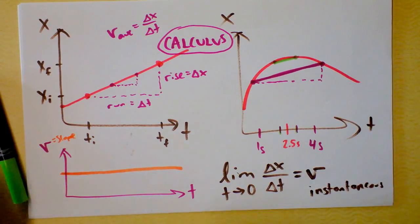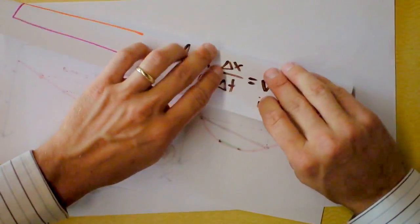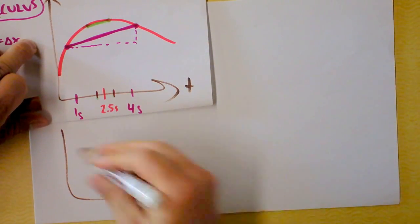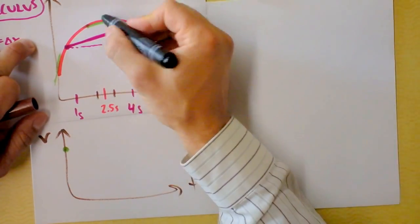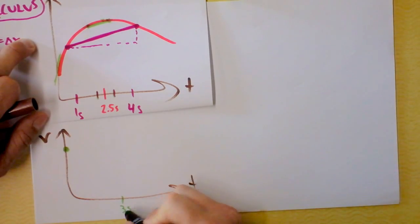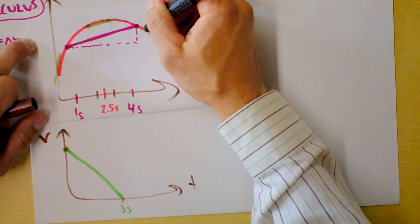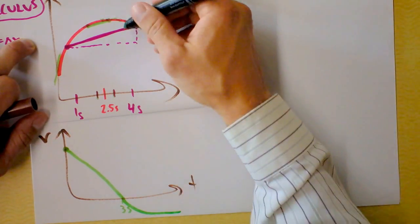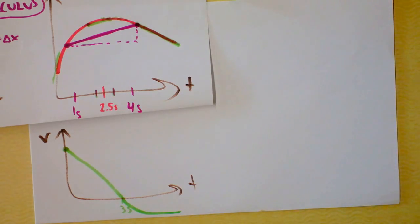Instantaneous velocity is the velocity at a particular instant. Watch the calculus videos to see this make more sense. Now let's graph velocity as a function of time for that curved position graph. Initially the slope is very large, so velocity is large. It gets smaller and smaller, hitting zero at about three seconds. Then the slope goes negative and eventually becomes steady and constantly negative.